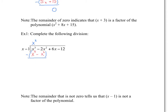Subtract: x cubed minus x cubed is 0, and negative 2 minus negative 1 is negative 1, so we get negative x squared. Drop down 6x and repeat. Divide negative x squared by x to get negative x, multiply to get negative x squared plus x, then subtract: 6 minus 1 gives 5x. Drop down the negative 12 and repeat: 5x divided by x is plus 5.